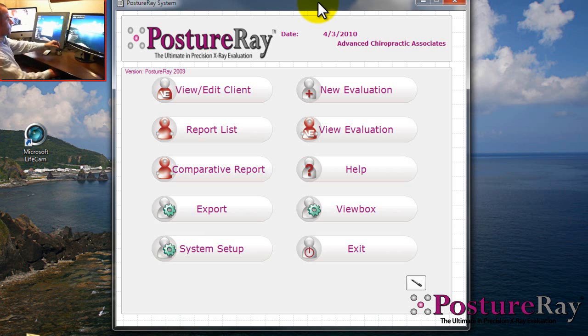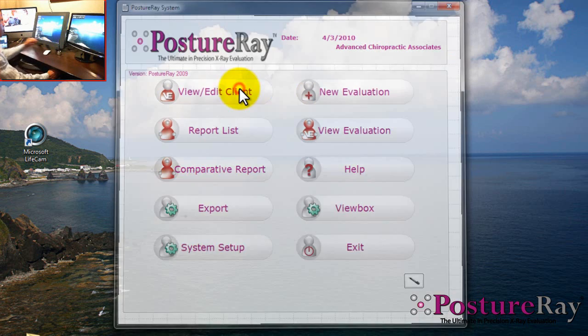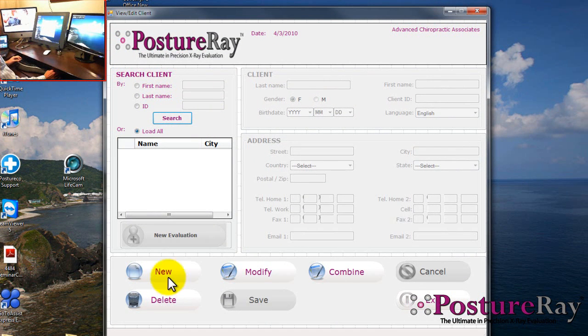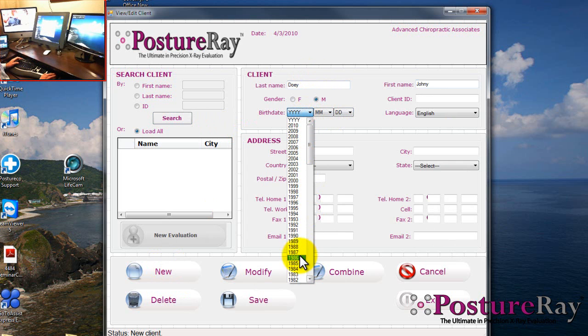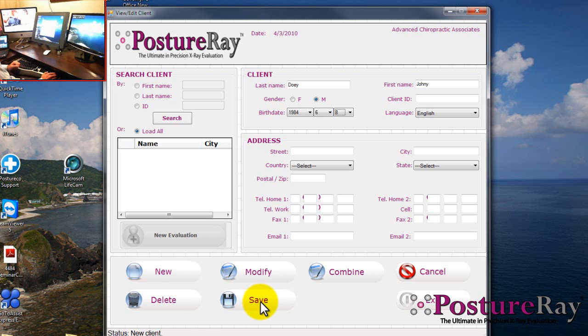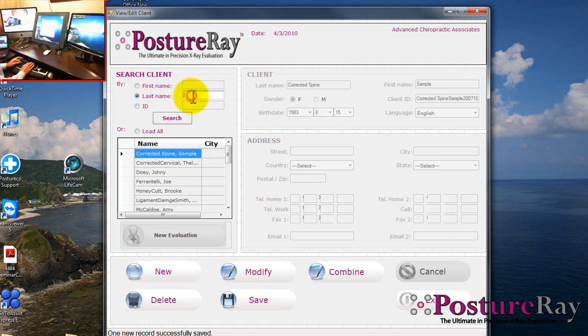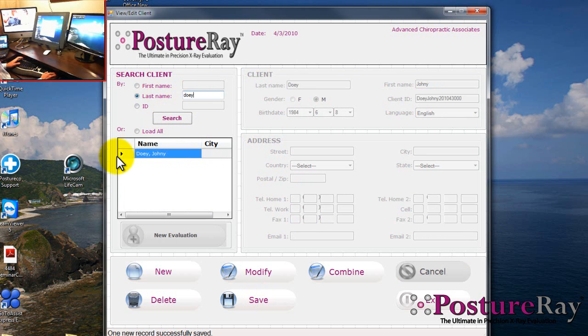First thing I'm going to do is create a new client. I'm going to create a new person and let's call him Doey, Johnny. He's a male, born in 1984. He's English, and you don't have to fill out any other demographics right now. I'm going to search for his name that I just created. There he is. We're going to hit new evaluation.